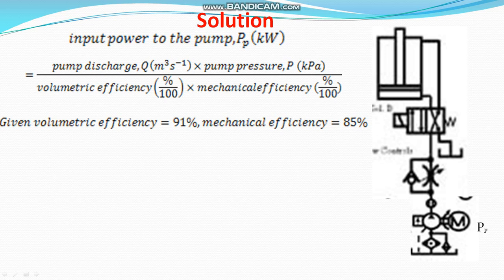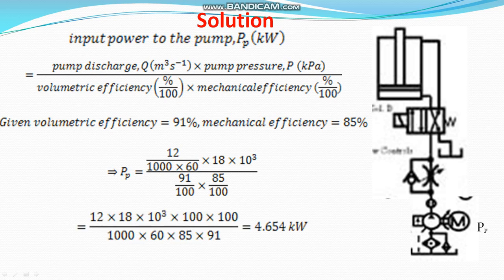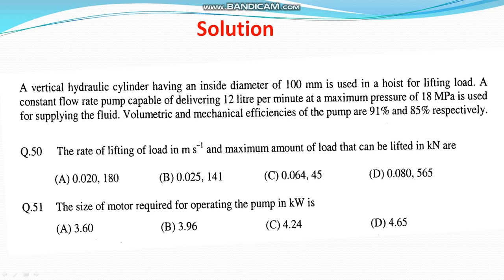Putting in all the values: discharge is 12 LPM converted to cubic meters per second, pressure is 18 MPa in kilopascal, volumetric efficiency is 91% and mechanical efficiency is 85%. Dividing by both efficiencies as fractions, you can easily calculate the input power required. The size of motor required comes out to be approximately 6.65 kilowatt.